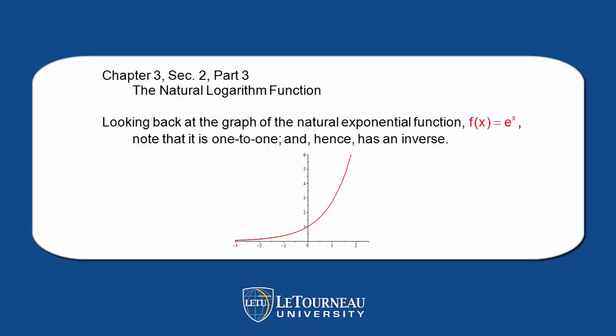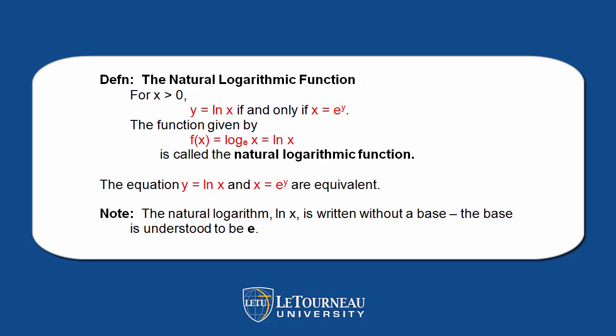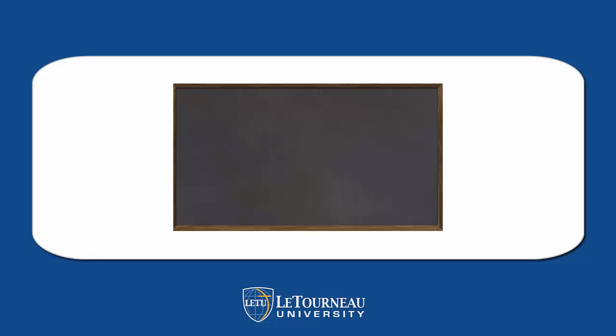Let's look at what the graph of the natural logarithm function will be. Please notice the notation — there's a special symbol because it is so important. It is read 'ln of x,' or 'natural logarithm of x.' The natural logarithm function, then: y equals natural log of x if and only if x is equal to e to the y. We generally do not write the base because ln immediately says that we have base e.